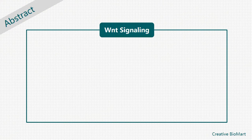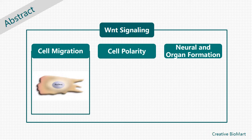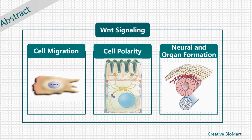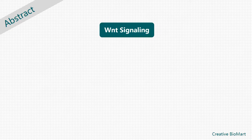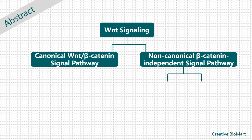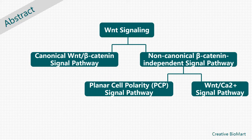The WNT signal pathway is an evolutionarily conserved signal pathway that regulates cell migration, cell polarity, and neural and organ formation during embryonic development. The major signaling downstream of the frizzled receptor have been identified, including the canonical WNT beta-catenin signal pathway, and the non-canonical beta-catenin independent signal pathway. The non-canonical WNT signaling pathway is further divided into the planar cell polarity signal pathway and WNT calcium signal pathway, which are being molecularly and biochemically resolved.